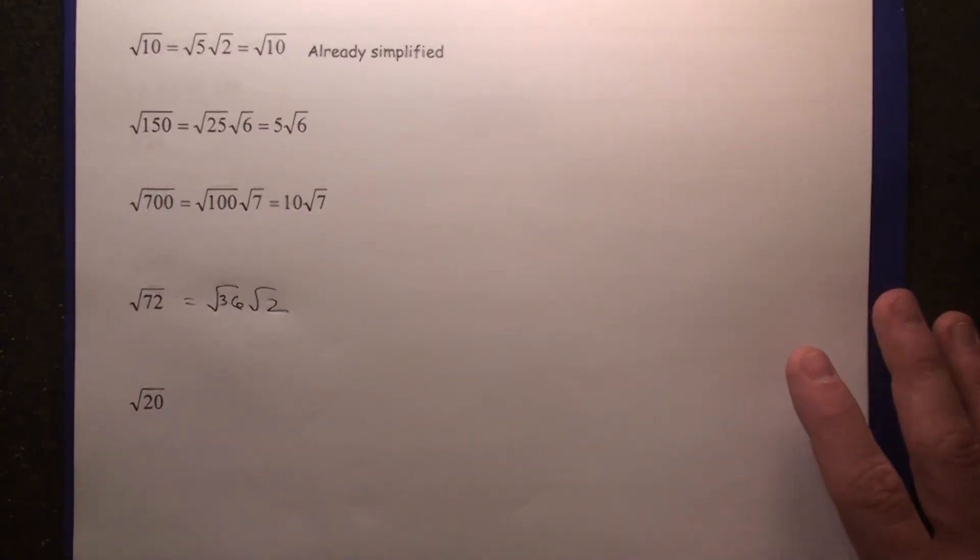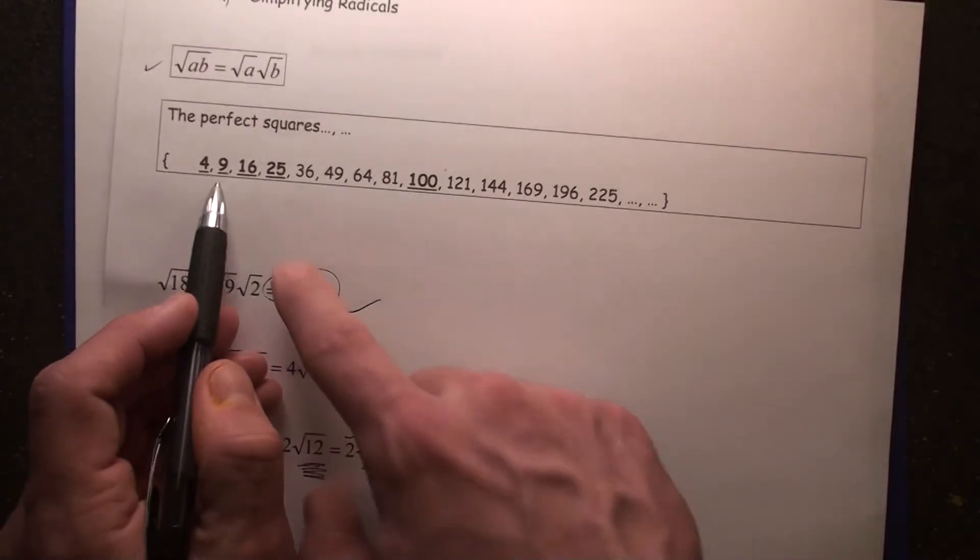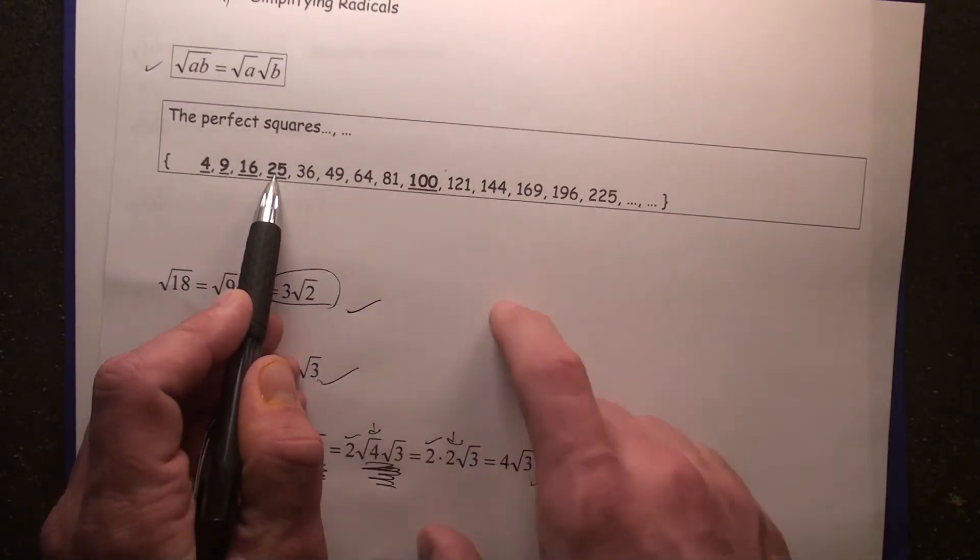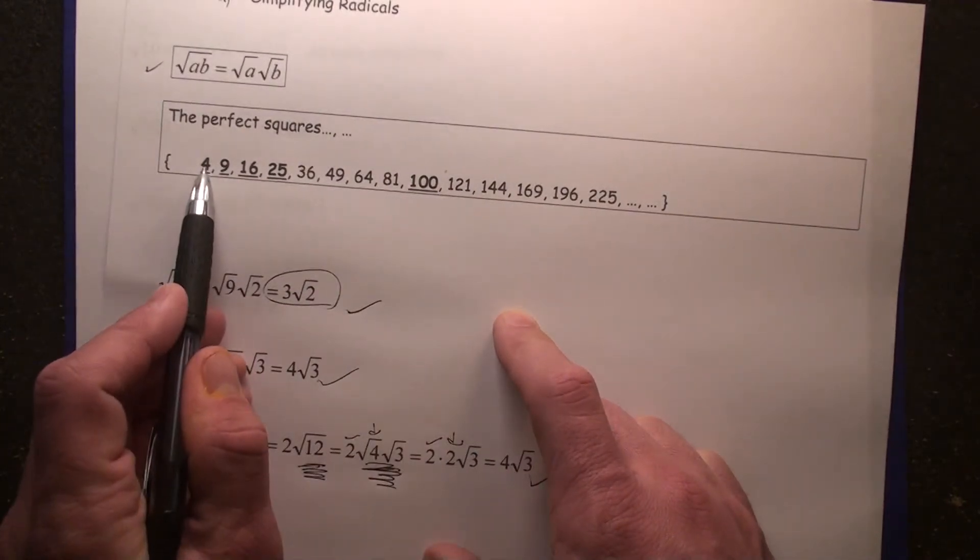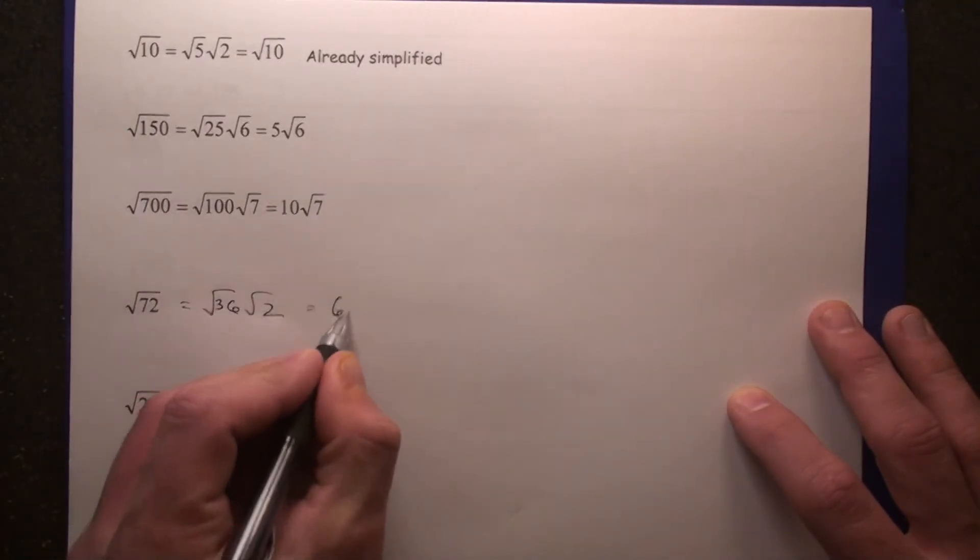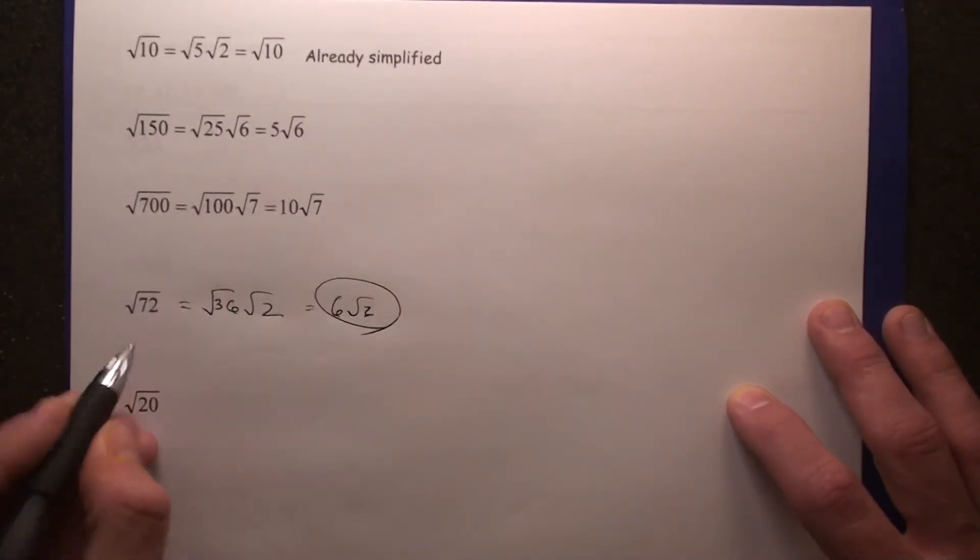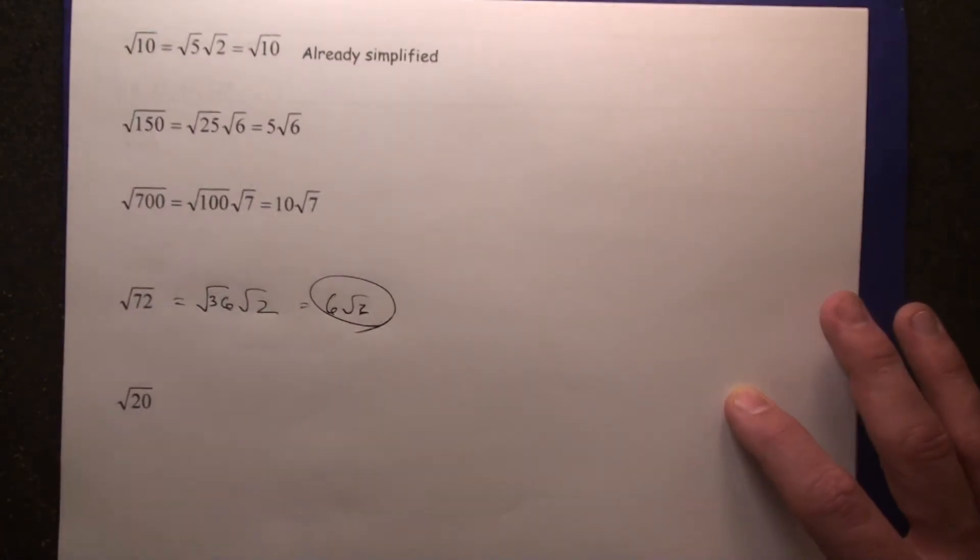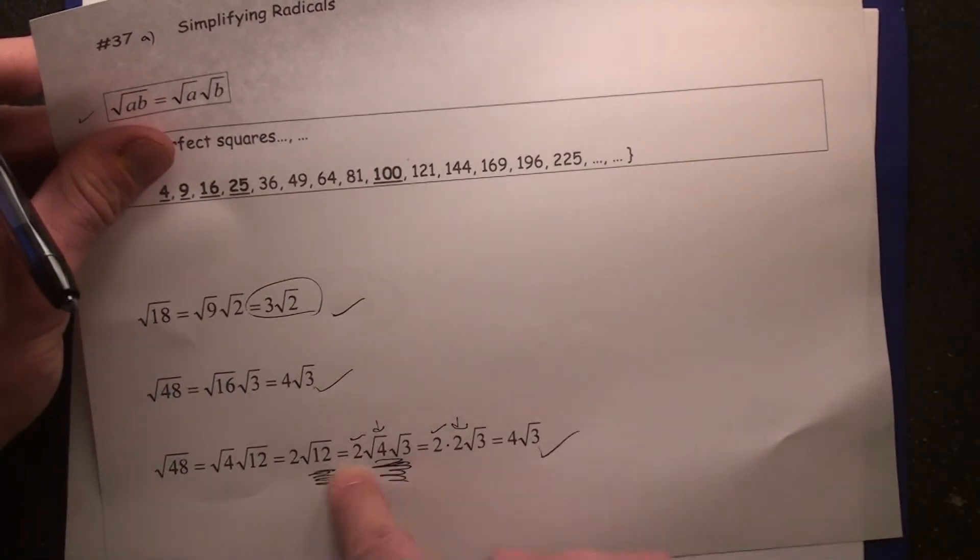Yes, 9 times 8 is 72. But guys, if 9 works, try 36, just like if 25 works, try 100. If 4 works, try 16. It'll just be faster if you just do it this way: 6 root 2. If you did 9, root 9, root 8, it's just going to take you longer. You're going to have to do a lot of extra work here.